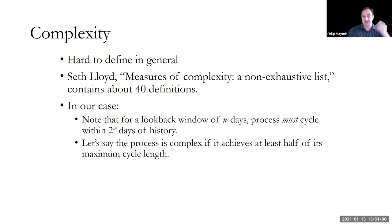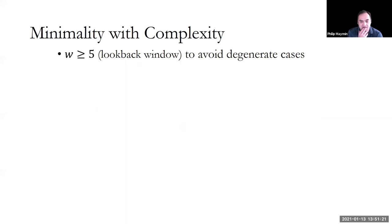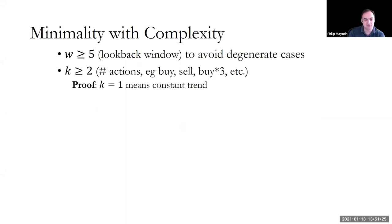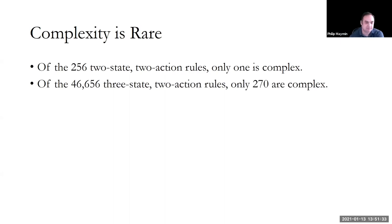There's once a paper by Seth Lloyd, he's a friend of MIT. Is he still there? Complexity and non-exhaustive list, he gave 40 definitions of complexity. In our case, we can just look that, we know that if we're looking out n days, or if we're looking back three days, the process must cycle within two to the third. So it'd be eight days. So that's the one I showed you before. It's cycled. But we can say it cycles for a very long window, and we'll say it's complex if it's more than half its length. So if the window length is 15, then the cycle age is already more than the age of the universe in seconds, so it's fine. We can make it big enough.